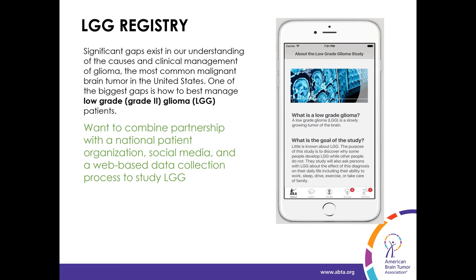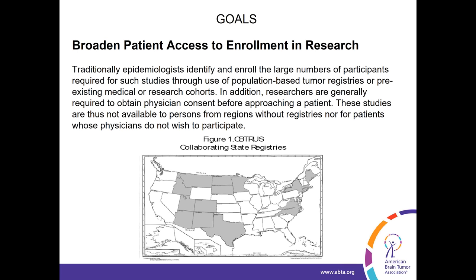One question that's already come up is some individuals are graded formally as grade 2, but there's some suggestion their lesion might be grade 3. We are including those individuals who are formally graded as 2 but perhaps have some features that are higher grade. One of the things that drives us for this registry are recent reports in the New England Journal of Medicine and WHO data showing that tumor molecular marker and genetic data probably better predicts prognosis and may better predict response to treatment than does histology.